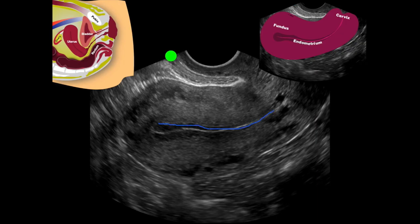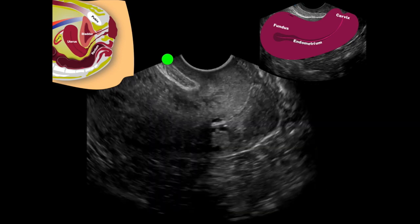Ultrasound uses a transducer that sends out ultrasound waves at a frequency too high to be heard. The ultrasound transducer is placed on the skin and the ultrasound waves move through the body to the organs and structures within. The sound waves bounce off the organs like an echo and return to the transducer. The transducer processes the reflected waves, which are then converted by a computer into an image of the organs or tissues being examined.